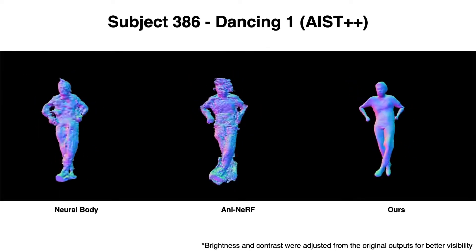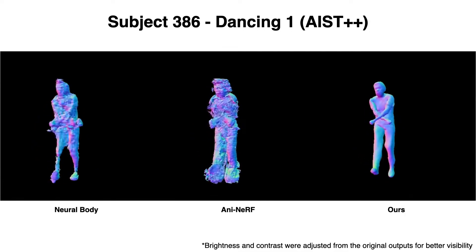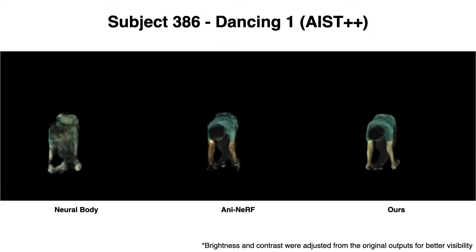Neural body models nerf in observation space, thus it has the worst generalization results on out-of-distribution poses.